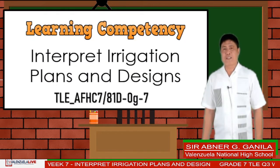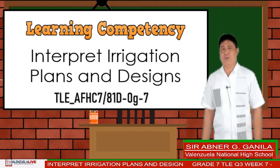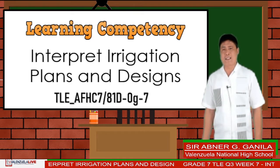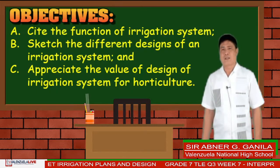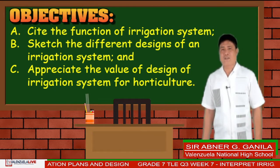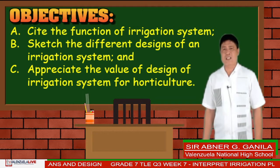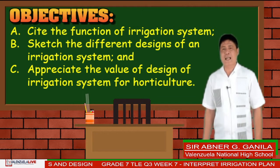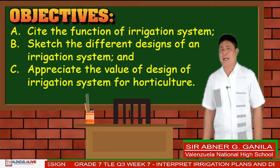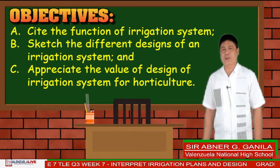Our learning competency for today is to interpret irrigation plans and designs. For today's objectives: cite the function of irrigation system, sketch the different designs of an irrigation system, and appreciate the value of design of irrigation system for horticulture.